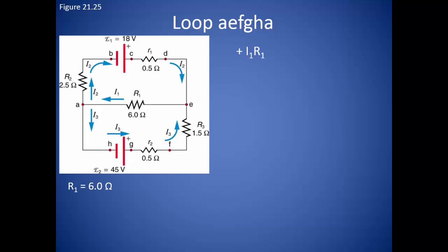When we get to the junction, we will turn right and go through resistor 3 with a resistance of 1.5 ohms. Again, going against the current here, so the IR drop will be positive. Notice that the current moving through this resistor is the one we've labeled as current 3.